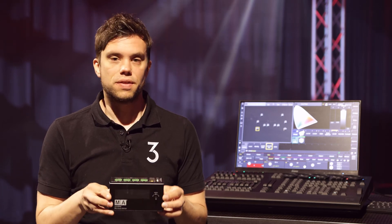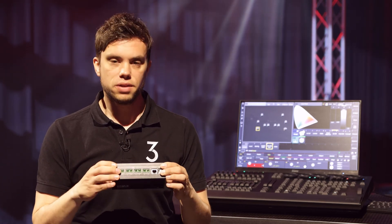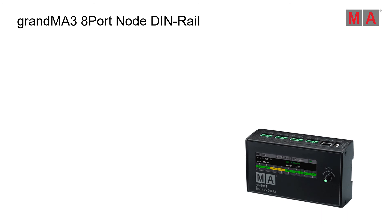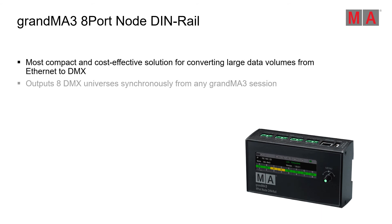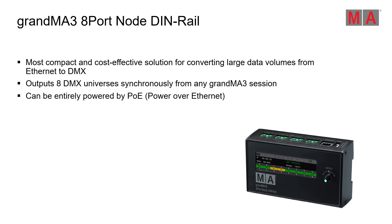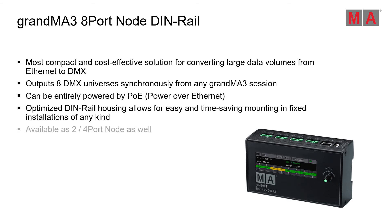The GrandMA3 nodes are available in a DIN Rail version as well. This DIN Rail housing allows for easy mounting in fixed installations — DMX data connects via terminals and the device supports Power over Ethernet. The DIN Rail devices offer housing specifically built for fixed installations, optimized for easy and time-saving mounting. They are available as 8 port, 4 port, and 2 port nodes, making them the perfect solution for mounting in fixed installation racks.